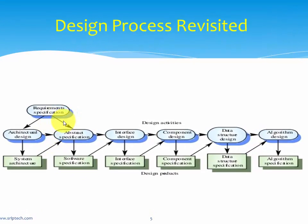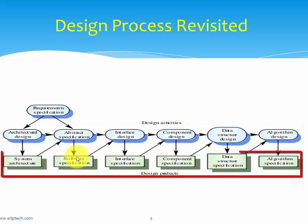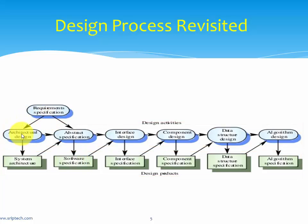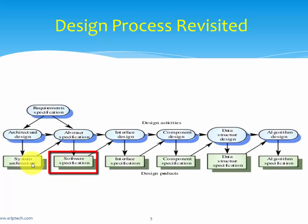To do a design, the basic input we require is a requirement specification. From the requirement specification we start performing the design activities, which are sequential in nature. The first activity is architectural design, where we broadly identify the subsystems and get a system architecture. From those subsystems we move on to abstract specification, where we specify the constraints of each subsystem and define what it is supposed to do, producing software specifications.